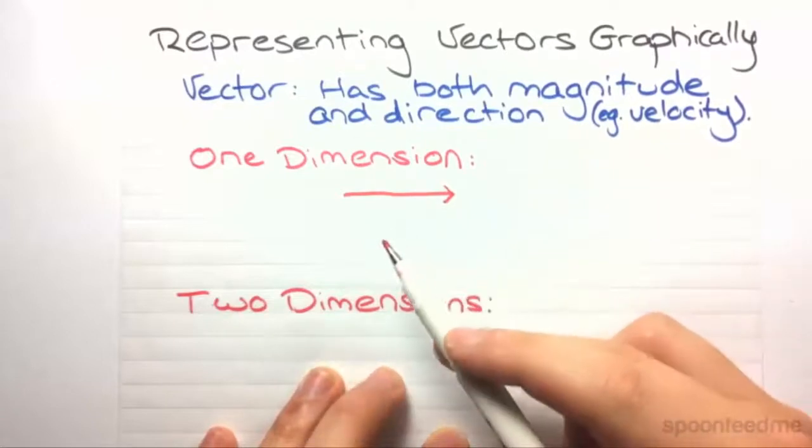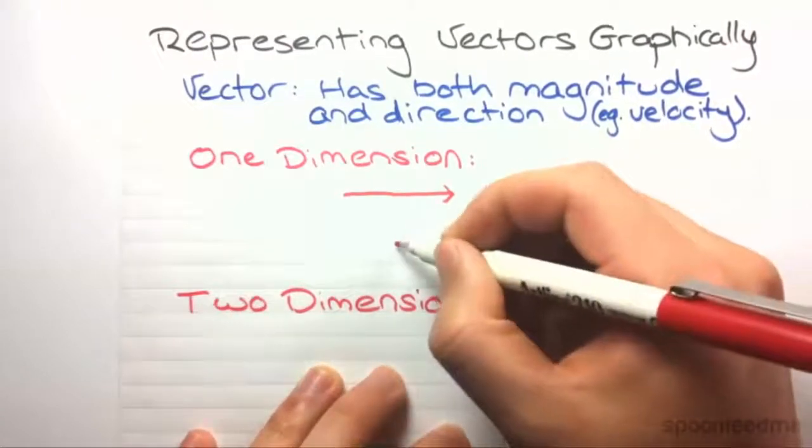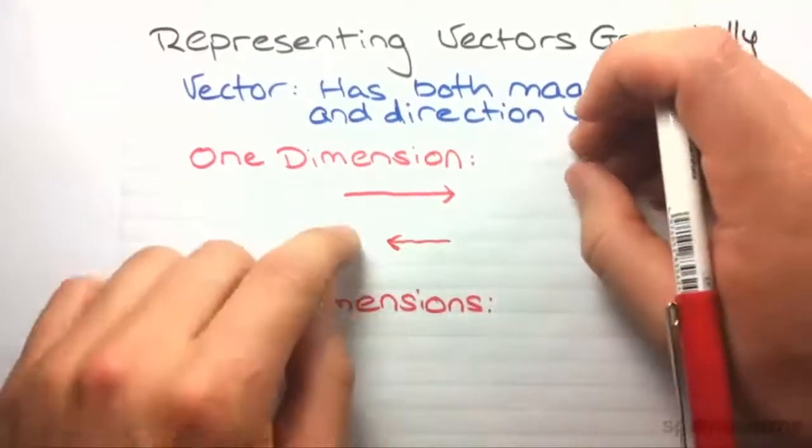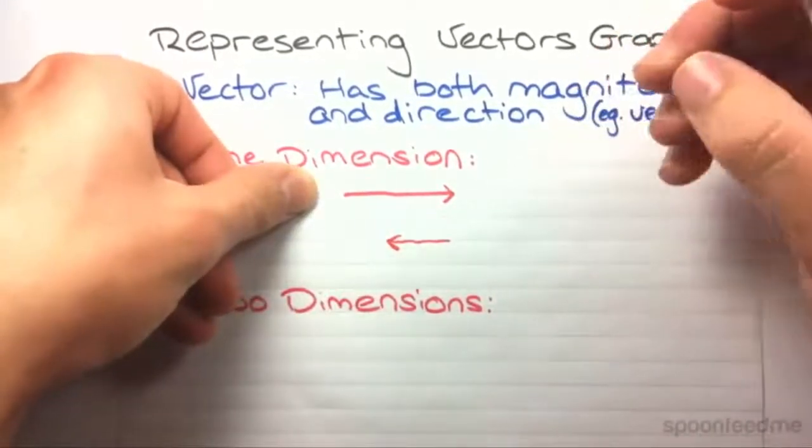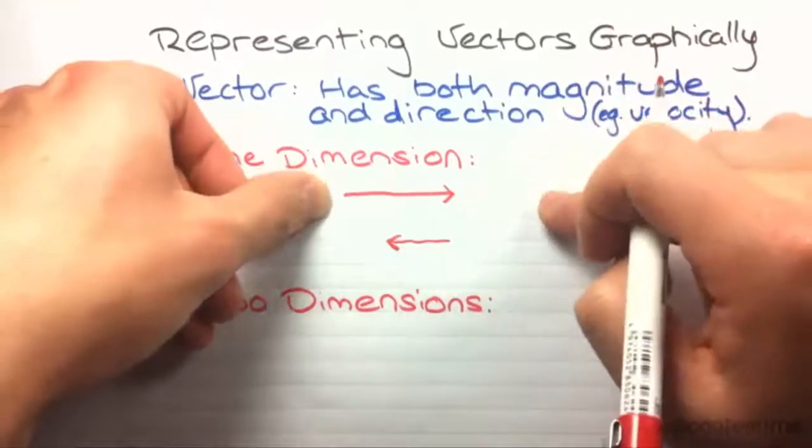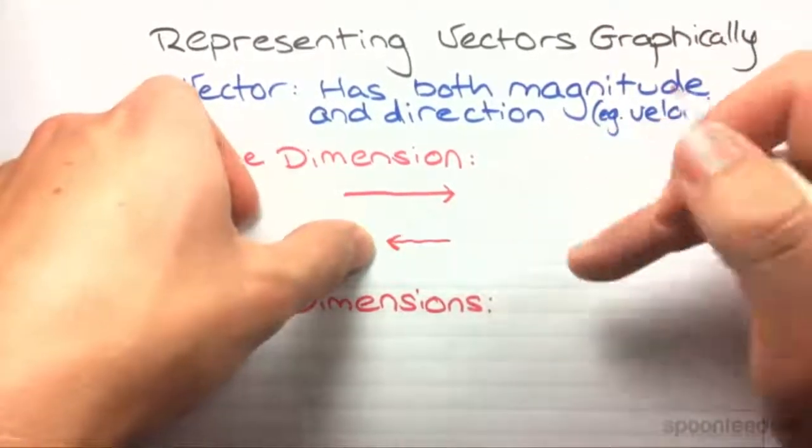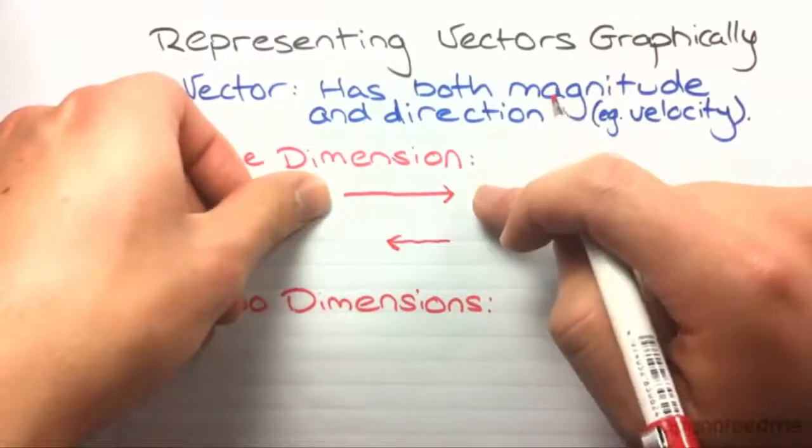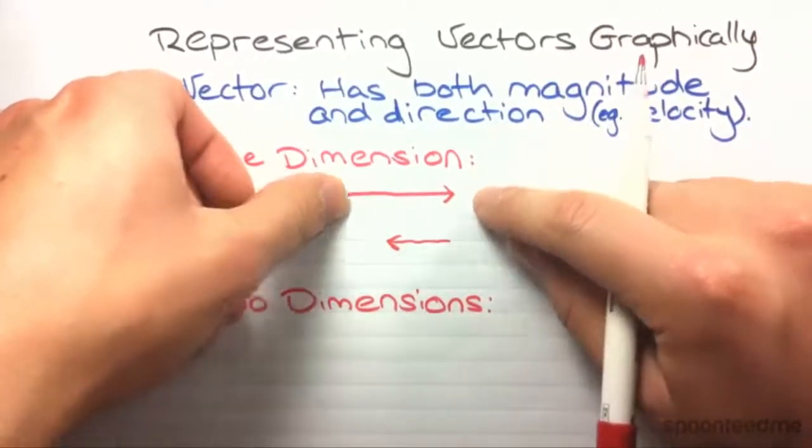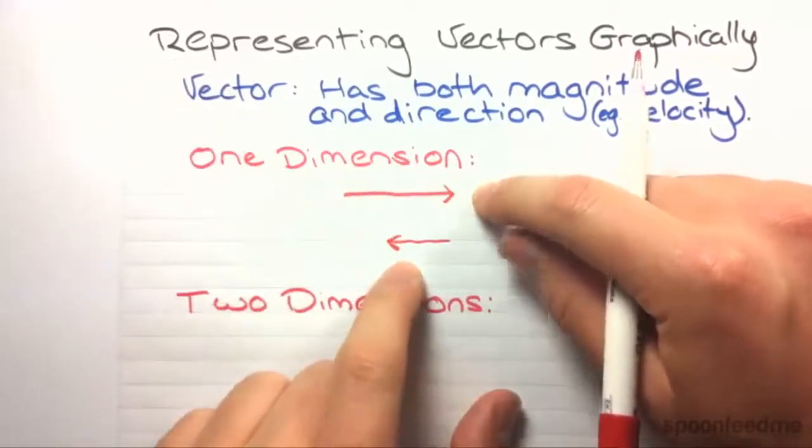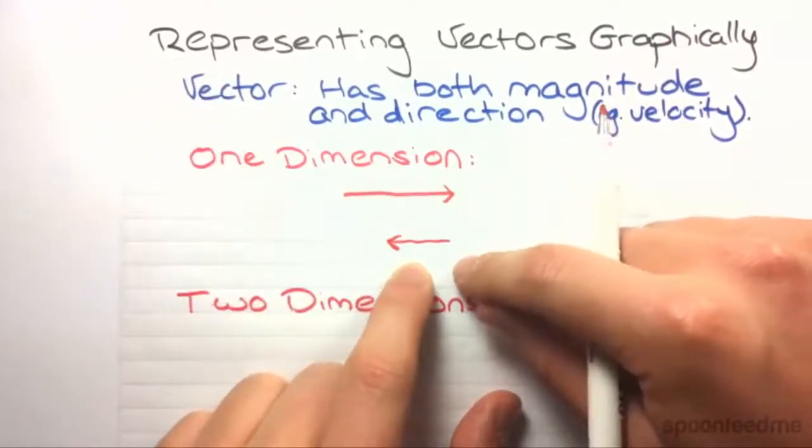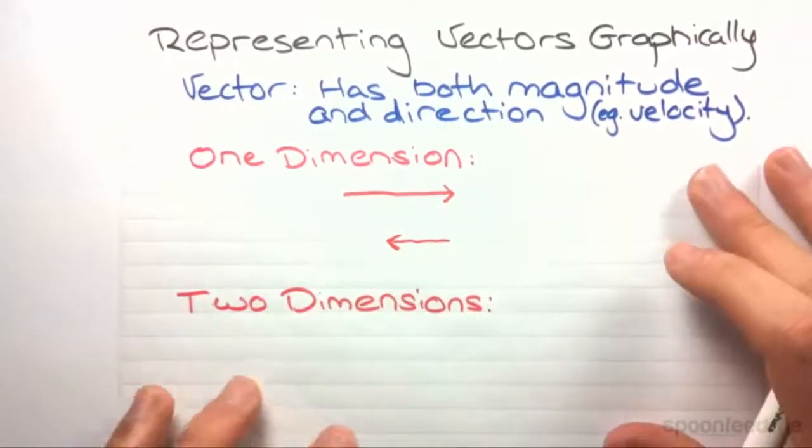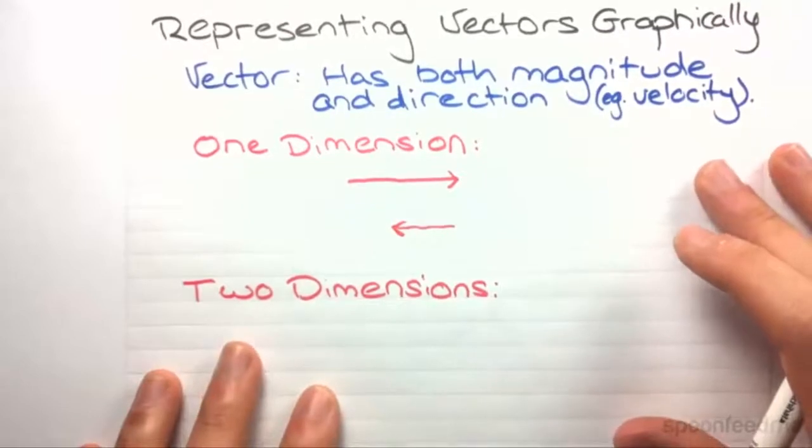As you know in one dimension you can either only go forwards or backwards, so you may also see one going in this direction. So effectively this is maybe a displacement vector going 10 meters to the right, this one may be a displacement vector going 5 meters to the left, or this may be a velocity vector representing 20 meters per second to the right, this may be a velocity vector representing minus 10 meters per second.